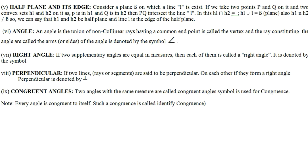An angle is the union of non-collinear rays having a common end point, which is called the vertex. The rays constituting the angle are called the arms or sides of the angle, and it is denoted by the symbol for angle.